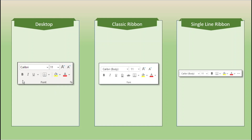Coming down to the lower left of the font group for the desktop, we have bold, italics, underline — and underline has a caret, so we can do a single underline or a double underline. Coming to the classic ribbon for the browser version, we again have bold, italics, underline — that is the single underline — and then it has a double underline special button that we would have to go to the dropdown to find in our desktop version.